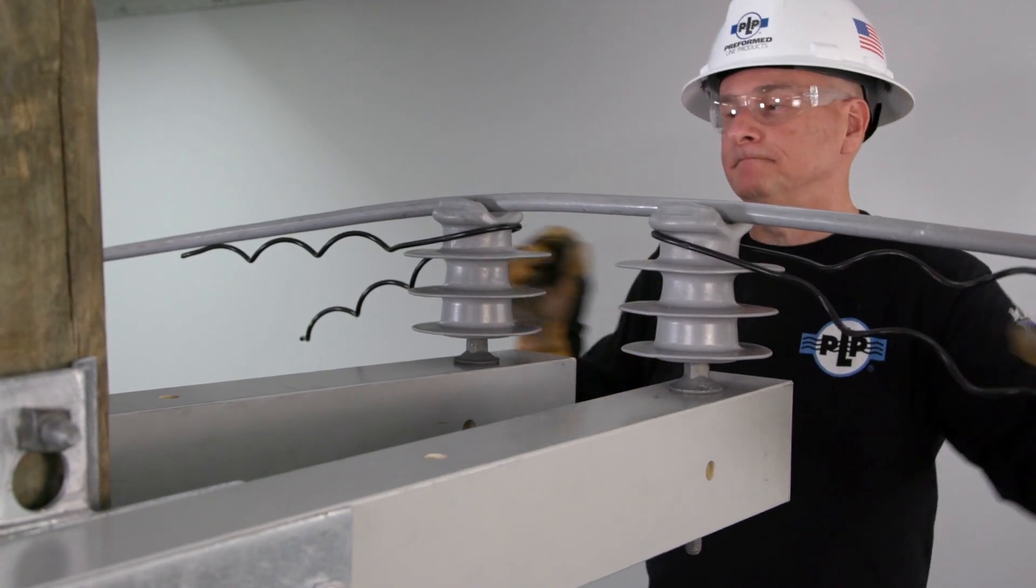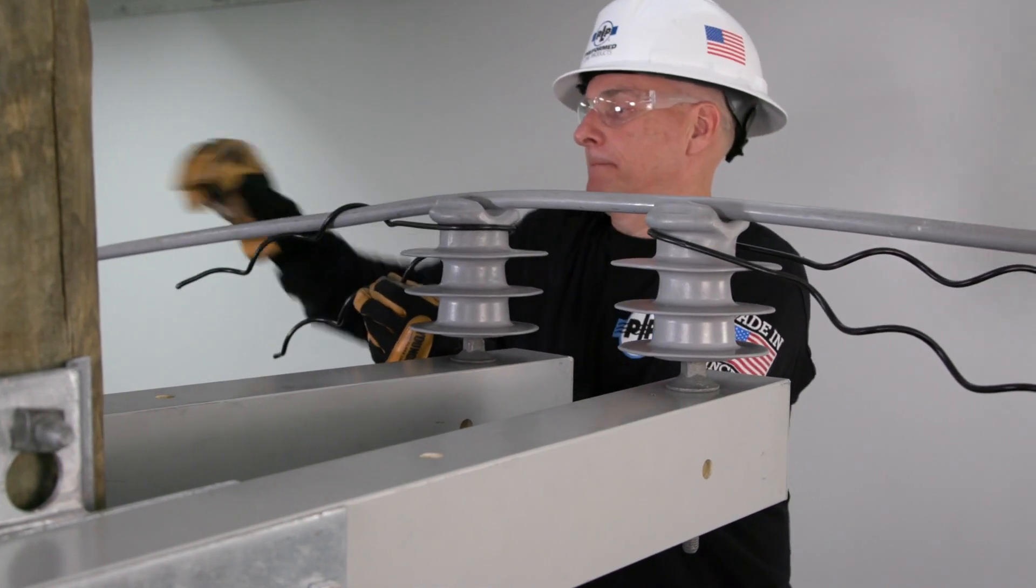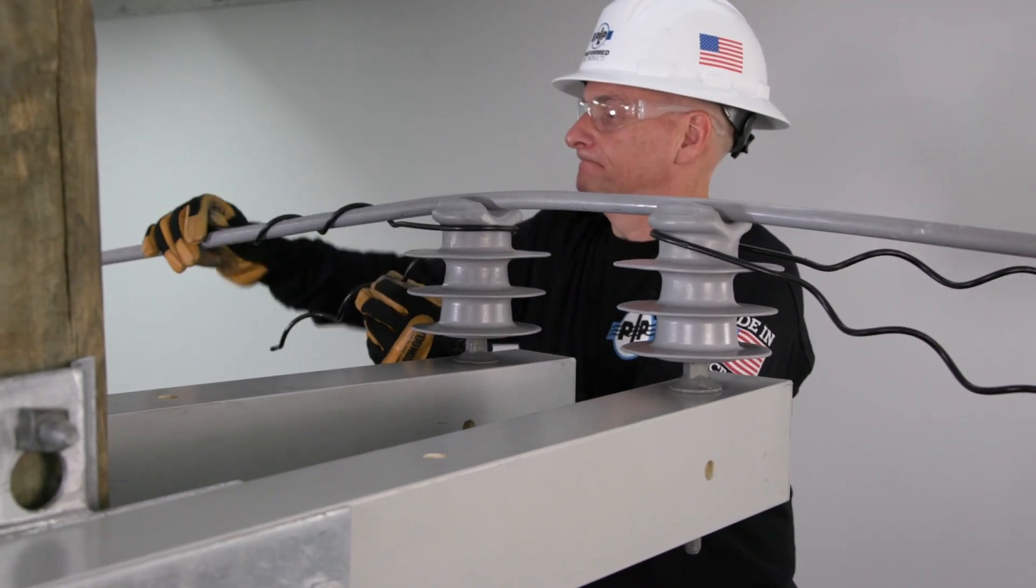Begin wrapping the first leg of the tie onto the conductor in a counterclockwise rotation starting at the crossover point. Be sure to snap the end of the leg into position with slight thumb pressure.